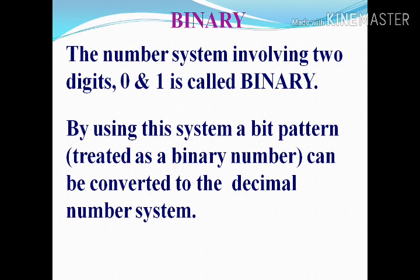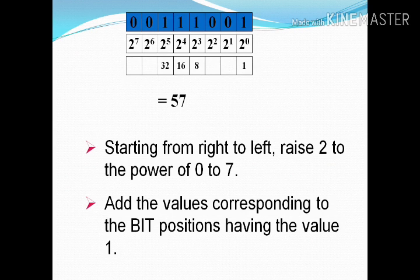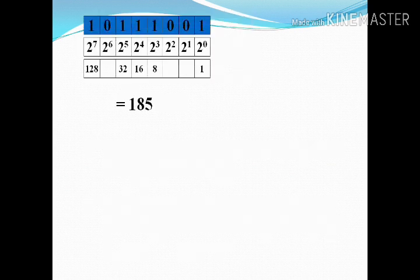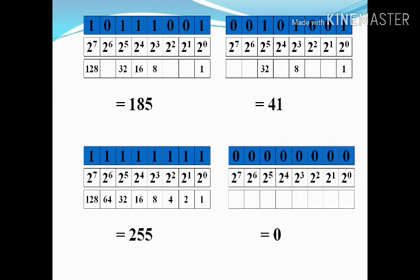A bit pattern of eight bits represents a character using binary numbers. That is why it will be two to the power eight. For decimal to binary conversion, our conversion-related lectures are there from which you can get the details.